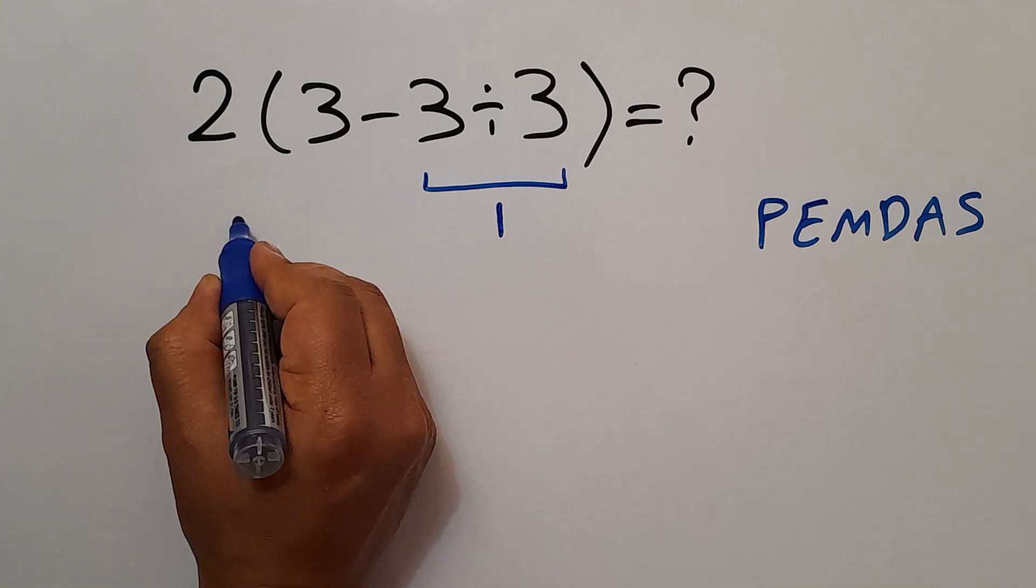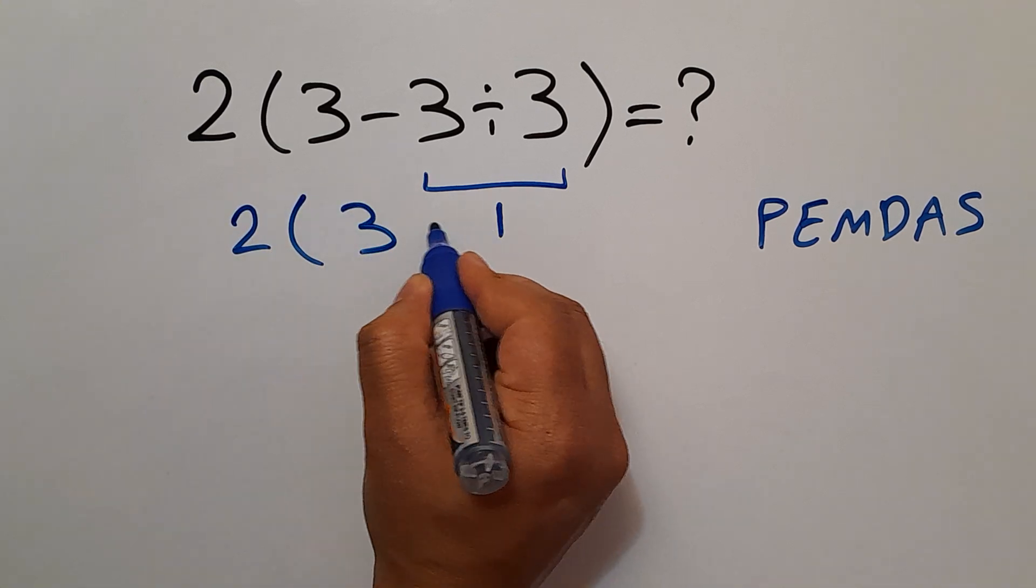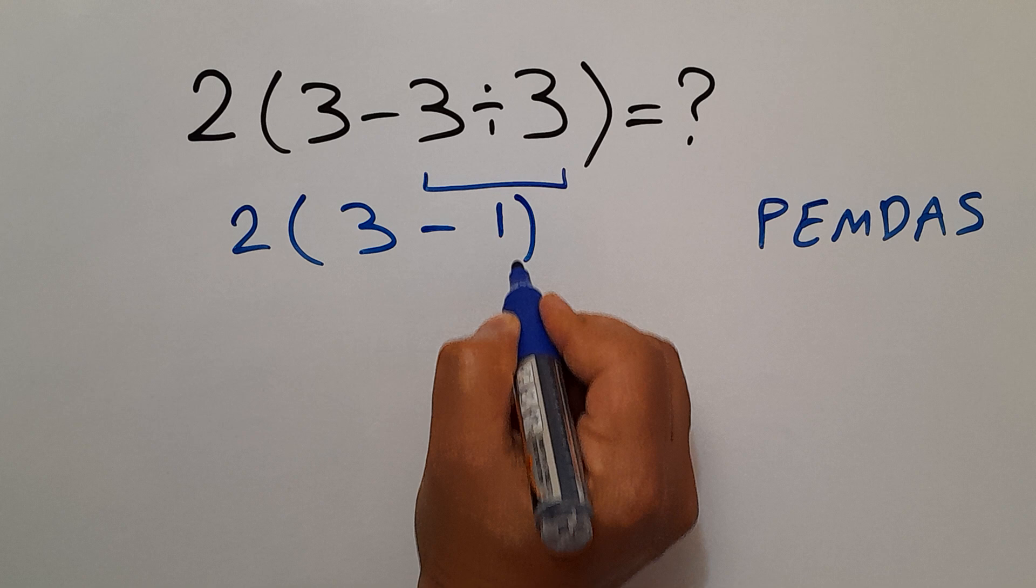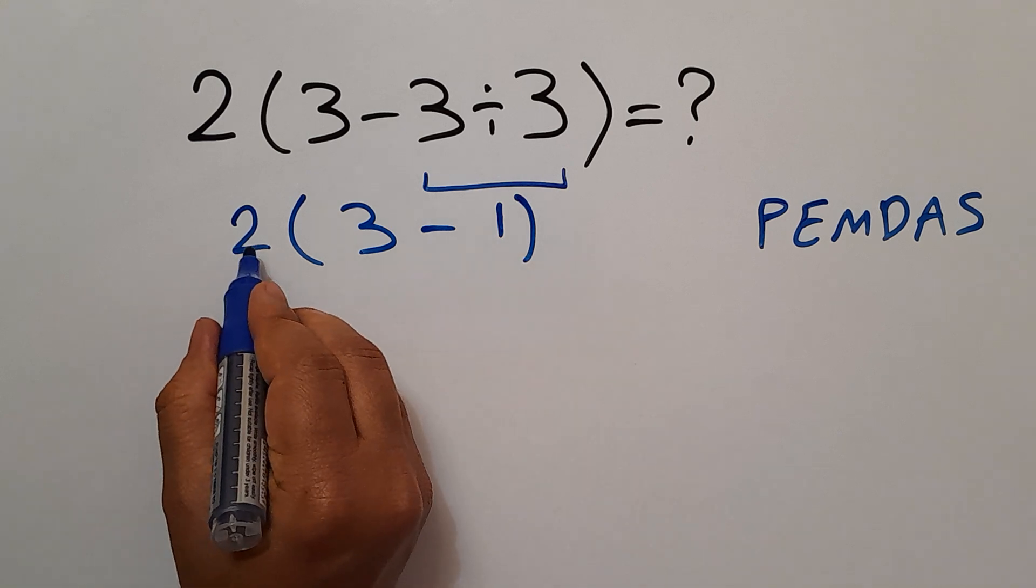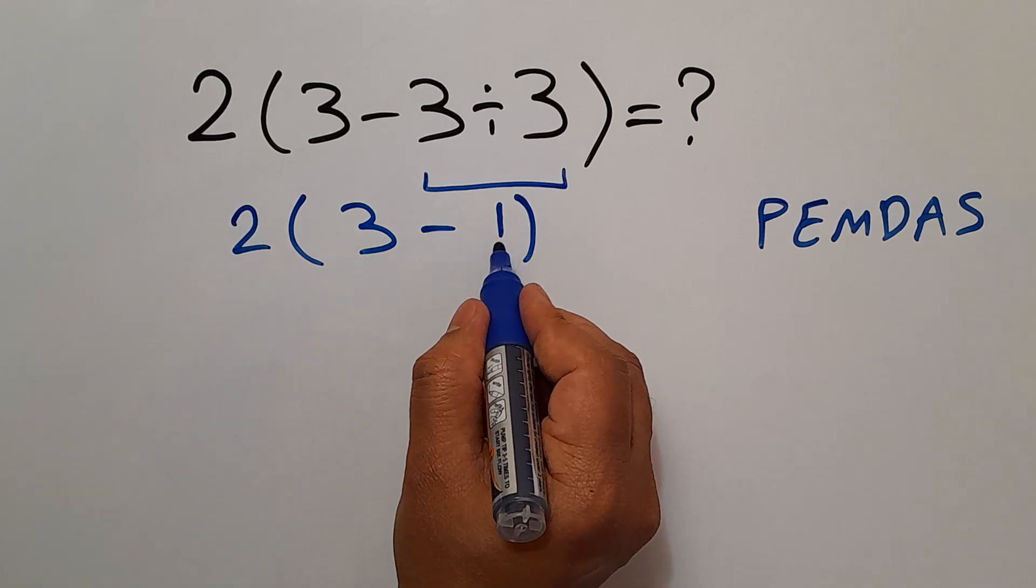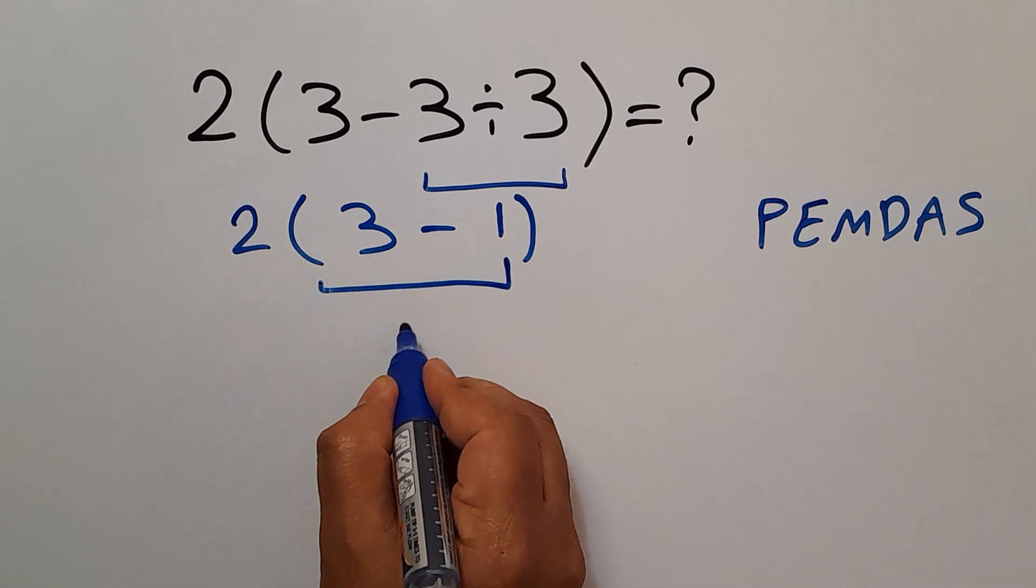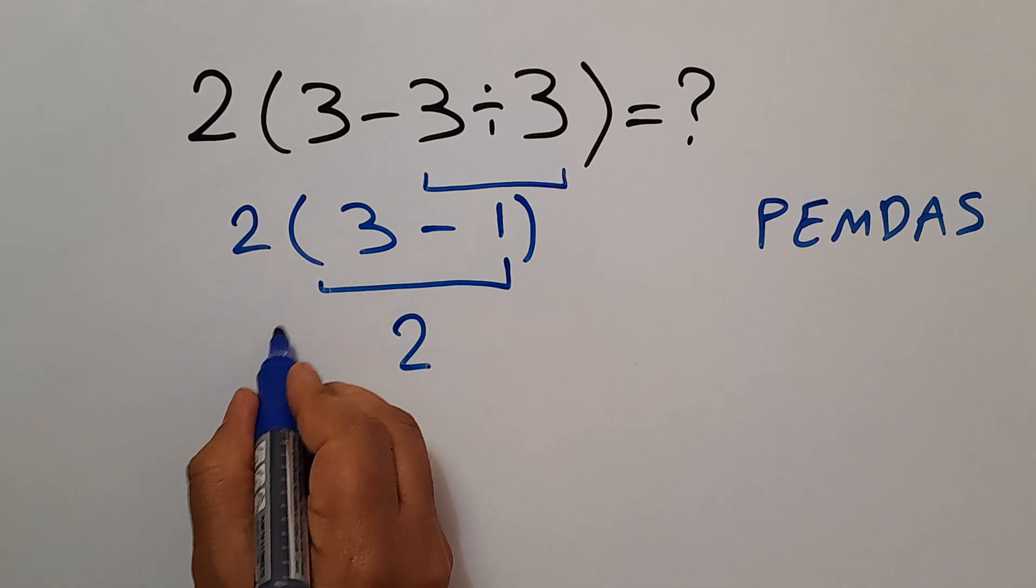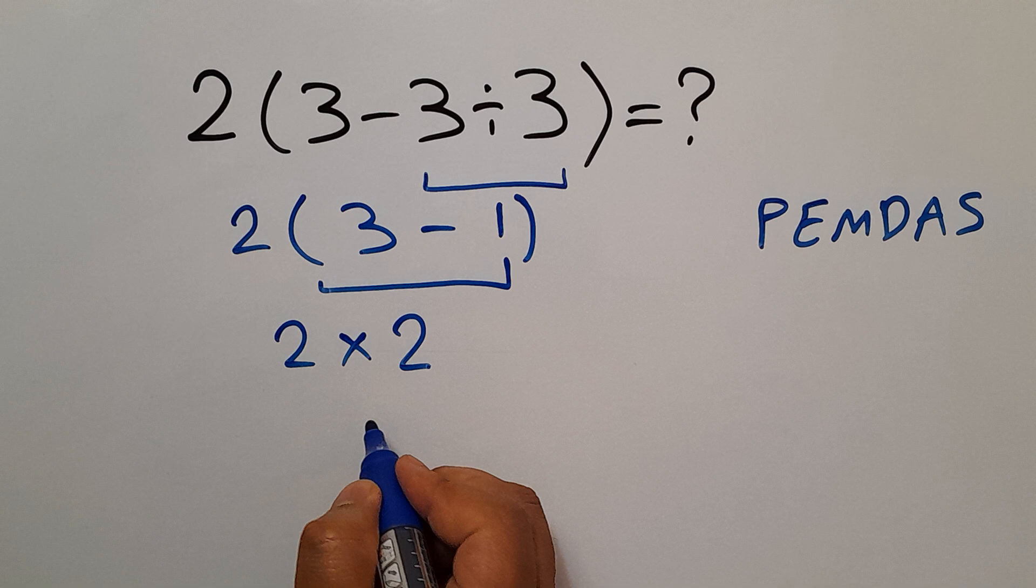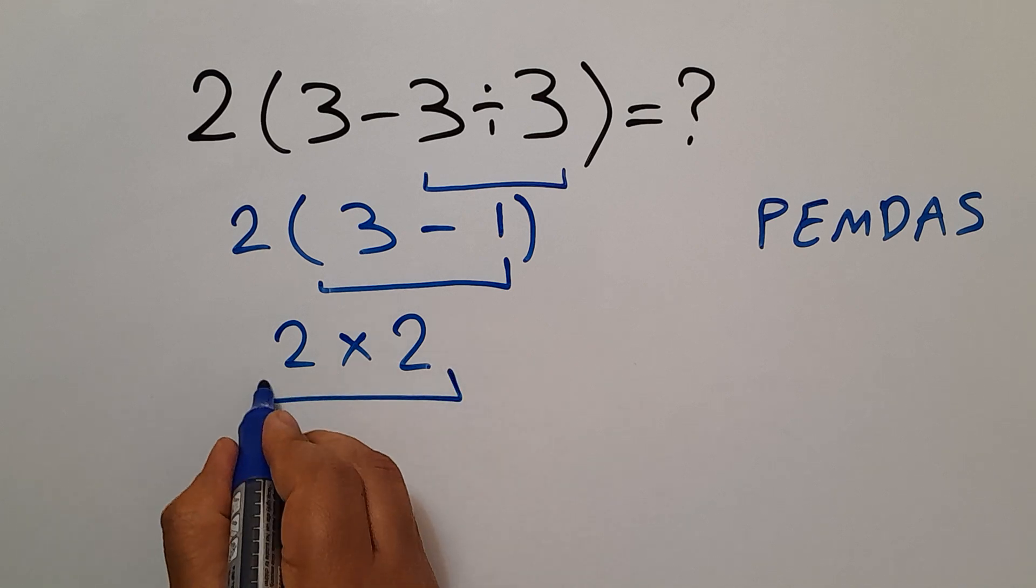So 2 times 3 minus this 1. So 3 minus 1 is just 2. So this is equal to 2. And let's recopy 2 times this 2. 2 times 2 equals 4.